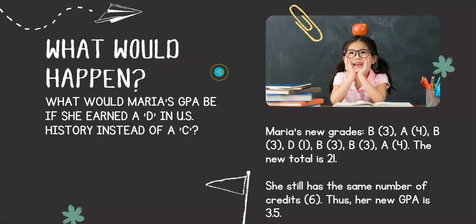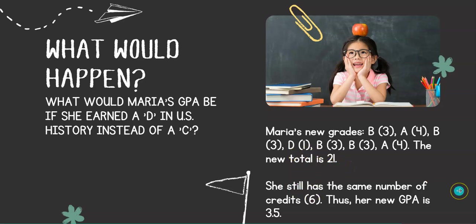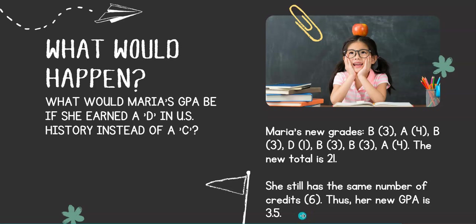Now, how would her grade change if her grade in U.S. History was a D instead of a C? We lower the points from two to one, so her new total is 21. She still has the same number of credits, so 21 divided by six is 3.5. Just by getting one grade lower, she dropped her grade point average by 0.17 points, which is a pretty big drop.